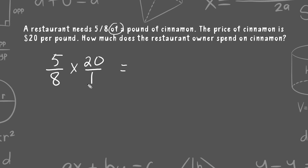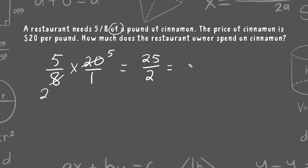Before multiplying straight across, if we have a numerator and a denominator that share a common factor, I like to reduce those numbers by that factor. Four can be divided into both eight and twenty: four goes into eight twice, and four goes into twenty five times. Now we multiply straight across: five times five is twenty-five, and two times one is two. Taking twenty-five divided into two equal parts gives us twelve and a half. Because we're dealing with money, we express that as twelve dollars and fifty cents — that is how much the restaurant owner pays for the cinnamon.